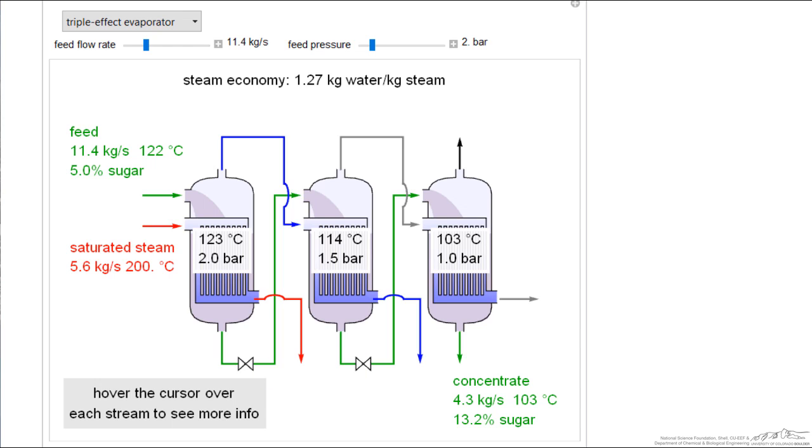We've concentrated the liquid to 8.8% in the first stage and 11.3% in the second stage. If I increase the feed pressure, notice the steam economy increases. I'm also increasing the temperatures in the various effects.